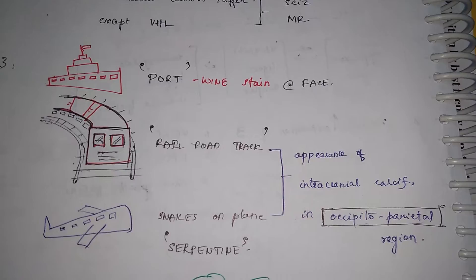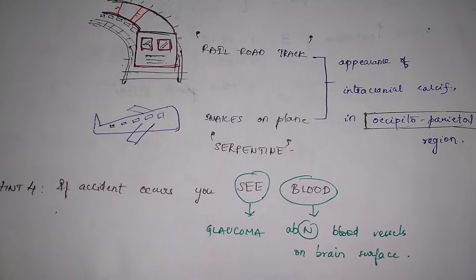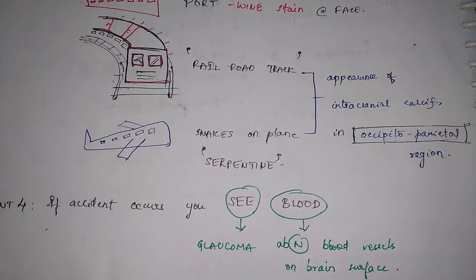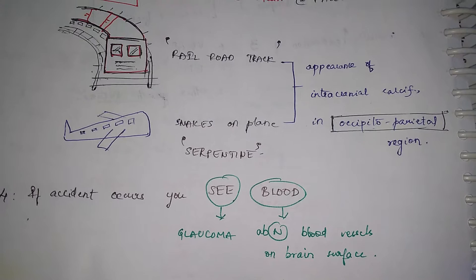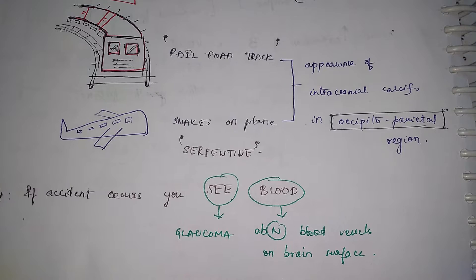And our hint four is if accident occurs that is the transport methods if they do occur the accidents you can see blood everywhere so C that is eye involvement is glaucoma I have also used the word C for eye involvement in tuberous sclerosis video also so C glaucoma blood blood is abnormal blood vessels on brain surface.